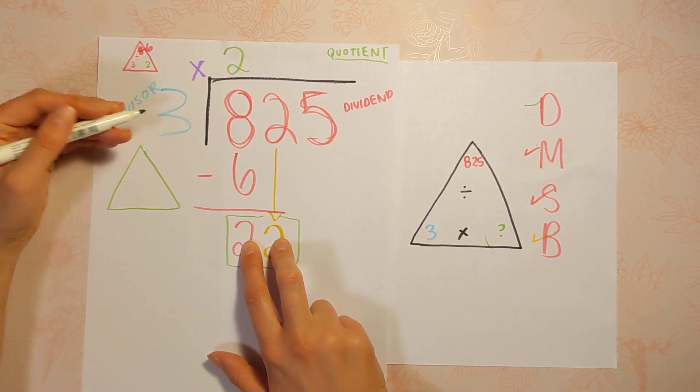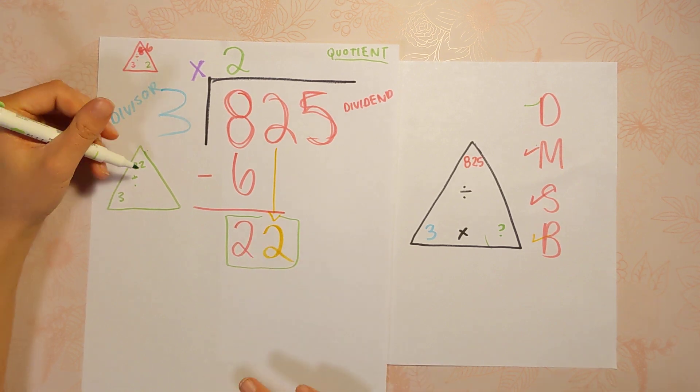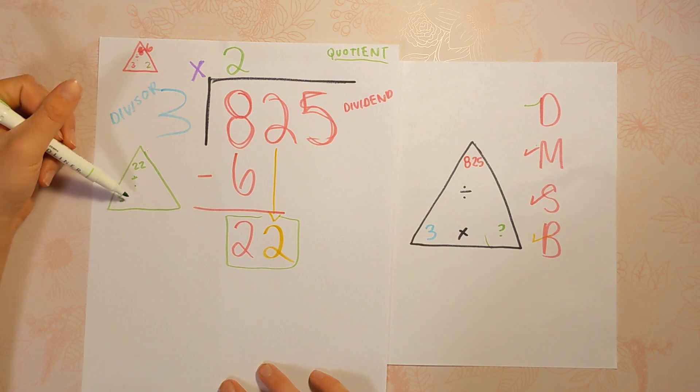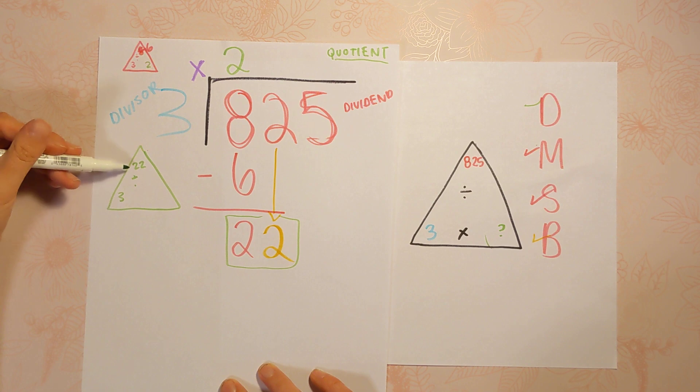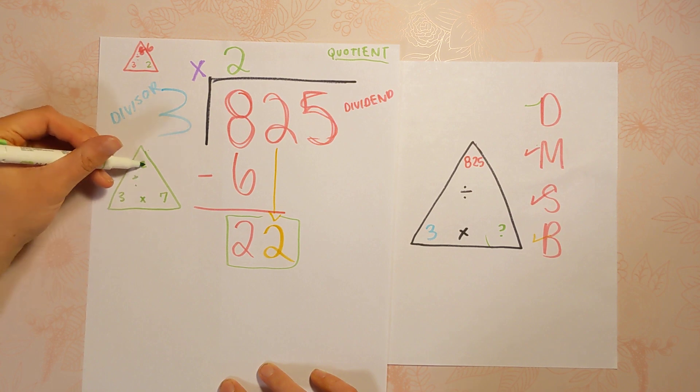22 divided by 3. So with a fact triangle that would look like this, divided by 3. Can't do it. But can you get close? Can 3 times something get you close to 22? If you're not sure, skip count your 3s until you get to 21 because that's pretty close. But I know that 3 times 7 is 21.